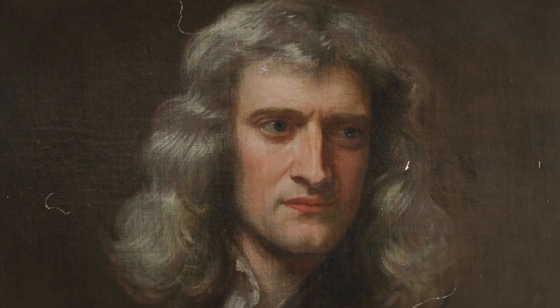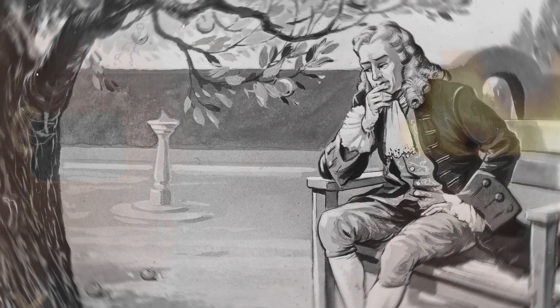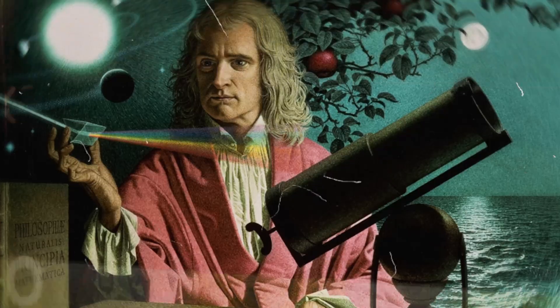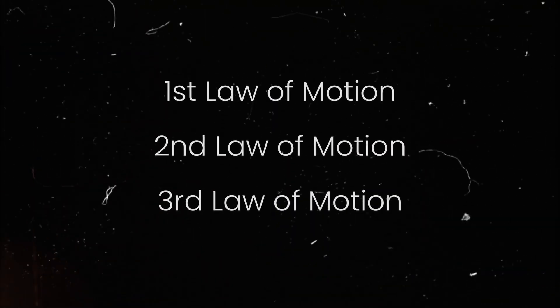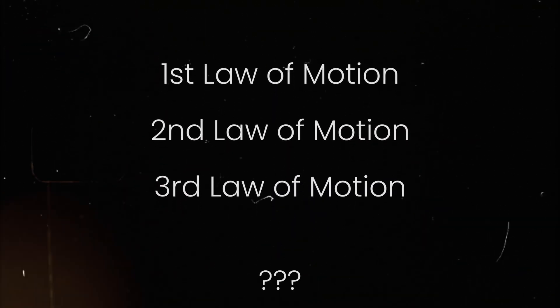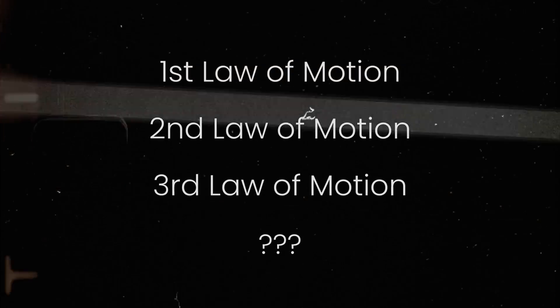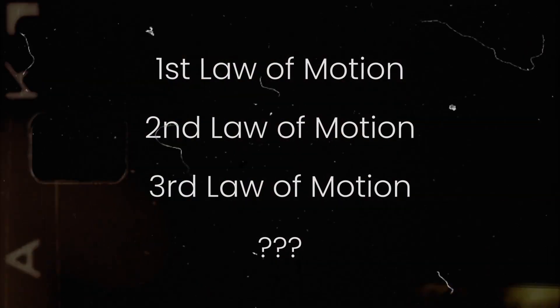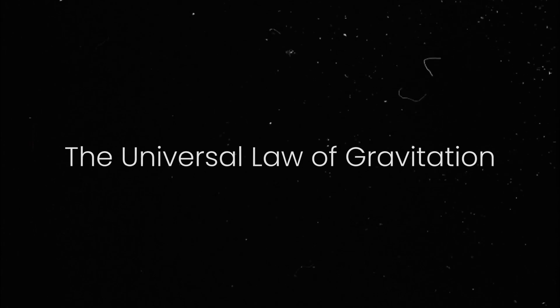We all know the story of Isaac Newton. In 1660, an apple fell on his head, and with a few strokes of human genius, he was able to derive his three laws of motion. However, there is a fourth theory that doesn't get as much attention, but is still crucial to the way that we understand the universe. His universal law of gravitation.